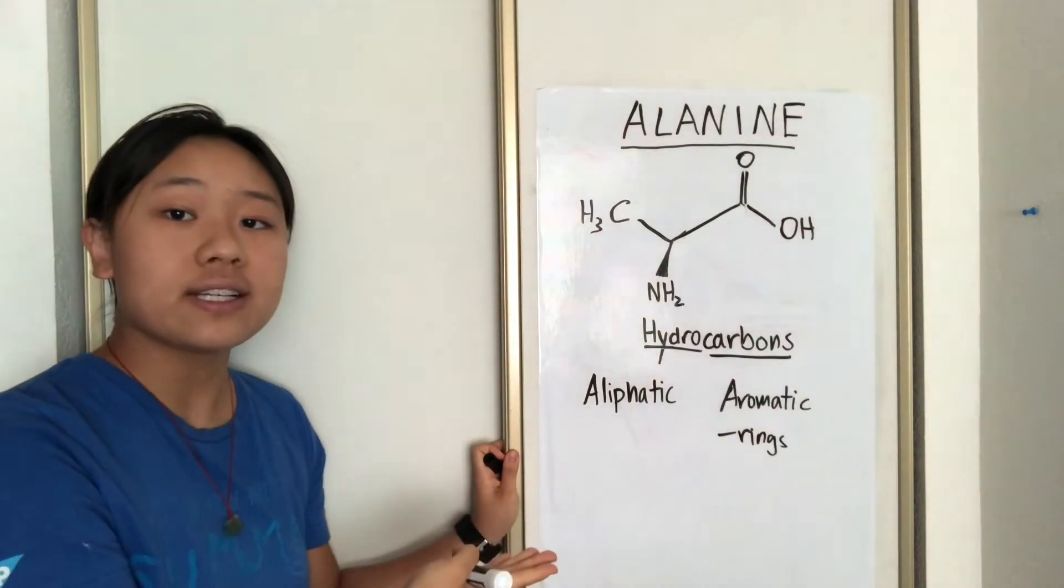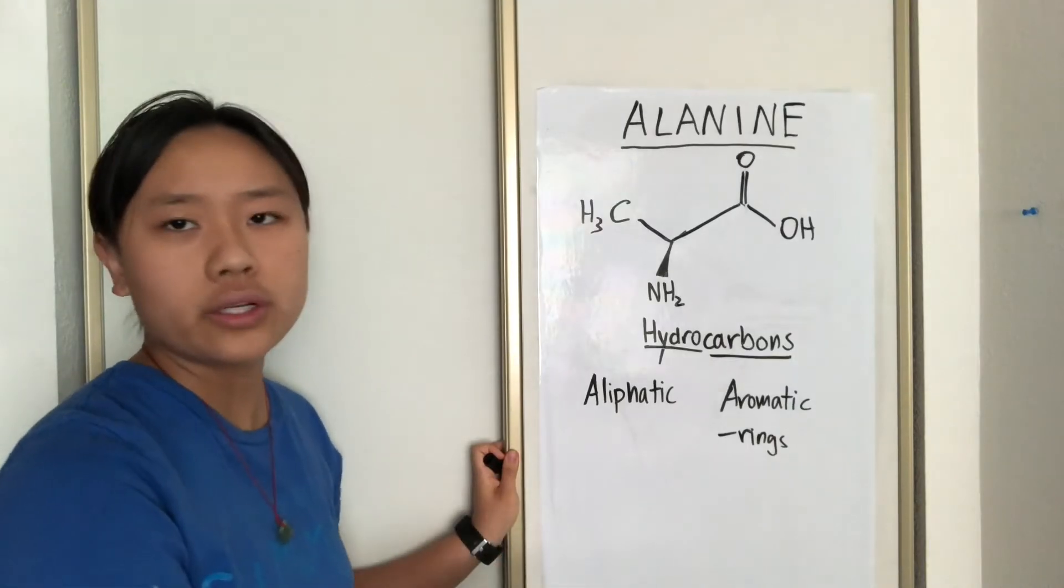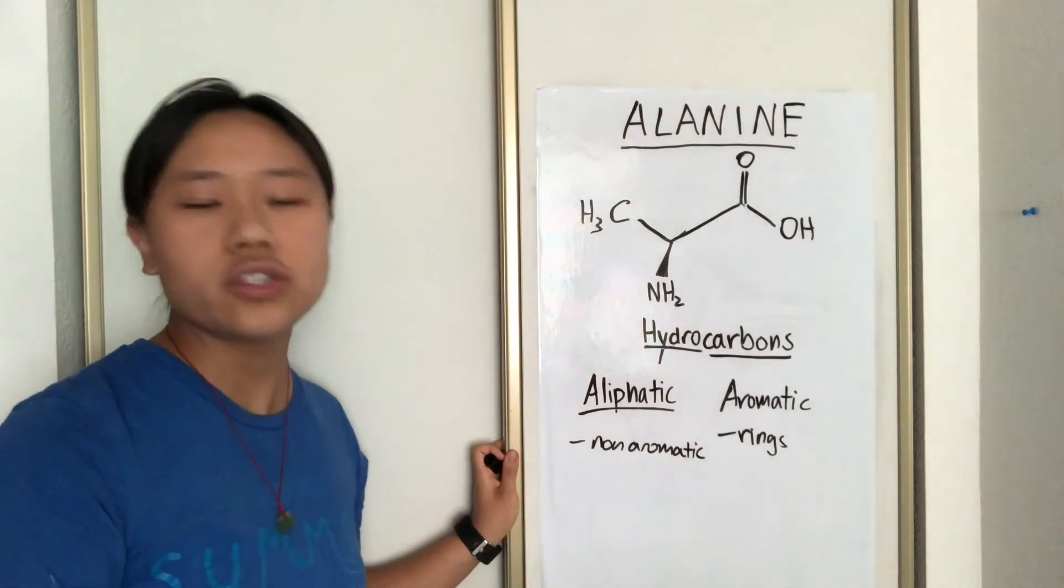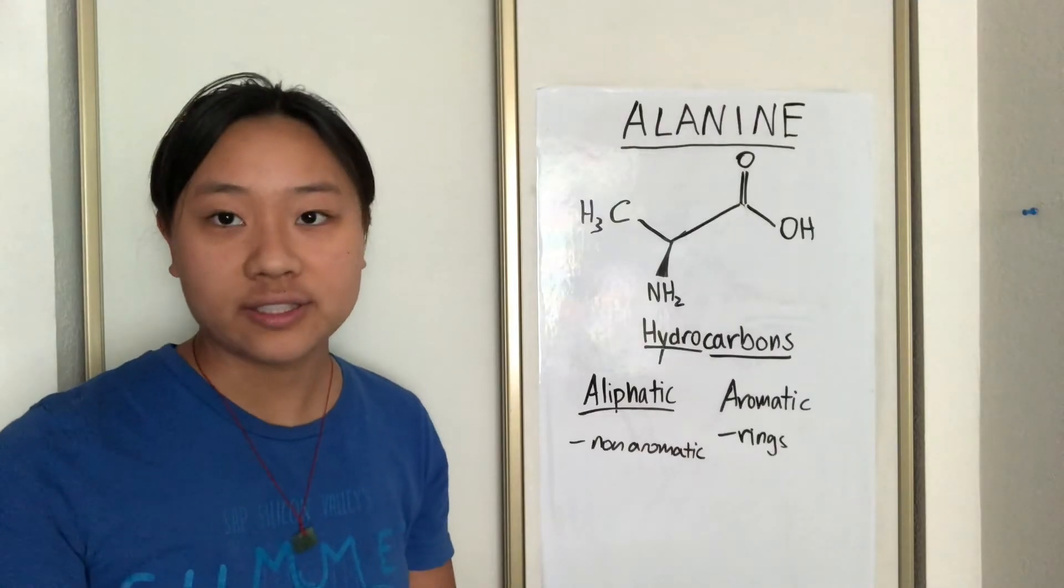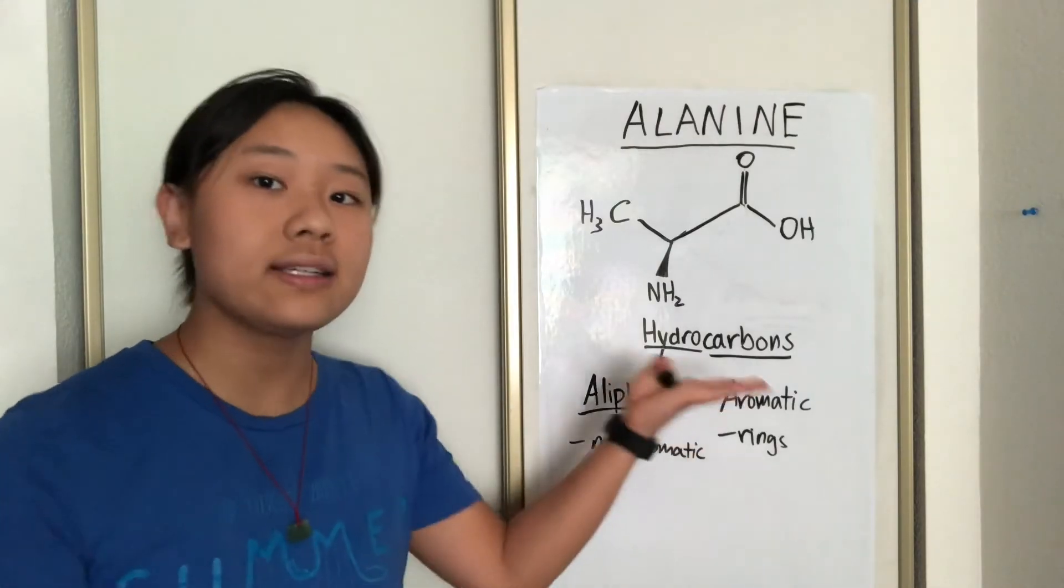Now aliphatics are basically the non-aromatics. They're kind of the leftovers, according to google at least. They do have rings, just not the type of rings that aromatics have. Kind of confusing, I know. Aliphatics are mostly synthesized from alkanes, which is why alanine is under the alkyl group.